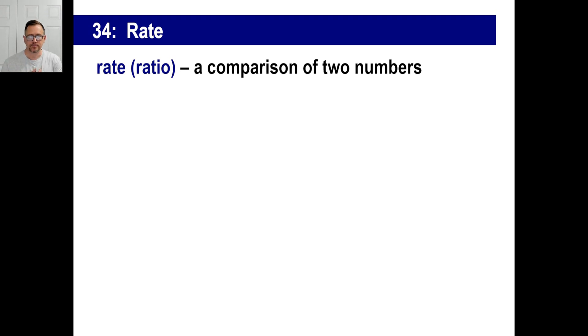All right, let's look at rate. Ratios are basically a comparison of two numbers. That's it. In other words, if somebody says to you, this is the ratio of guys to girls in a class. Well, that could mean there are 7 guys and 3 girls in the class. It could also mean there are 70 guys and 30 girls in the class.